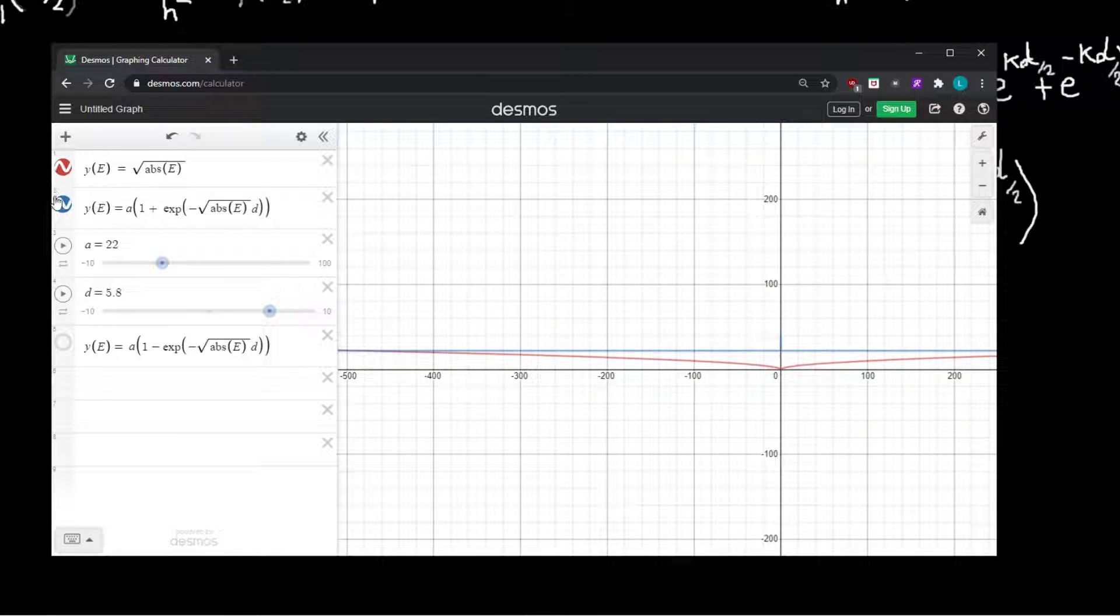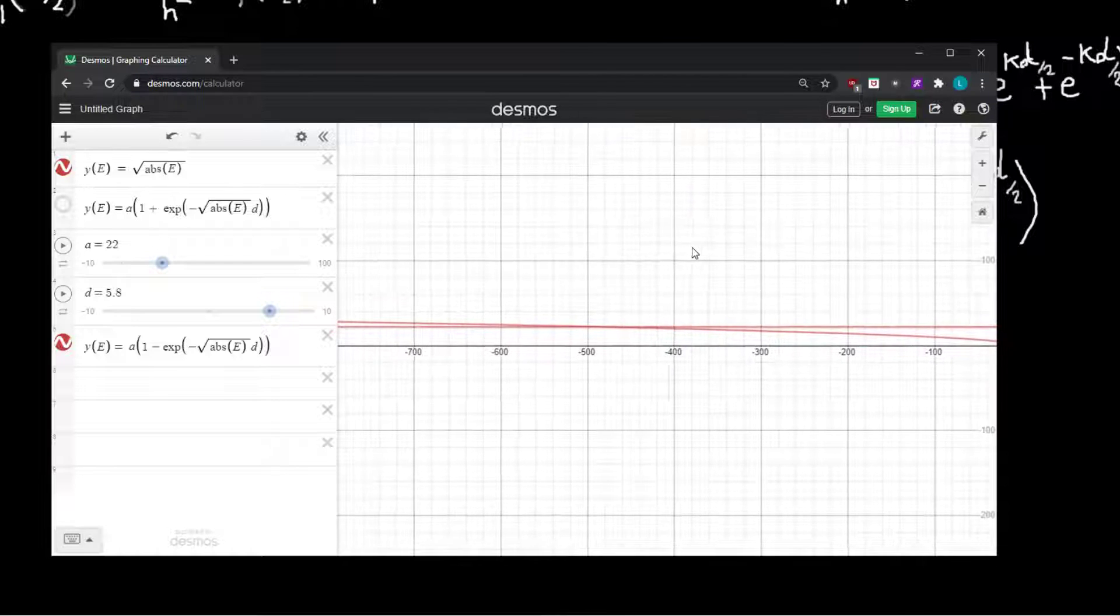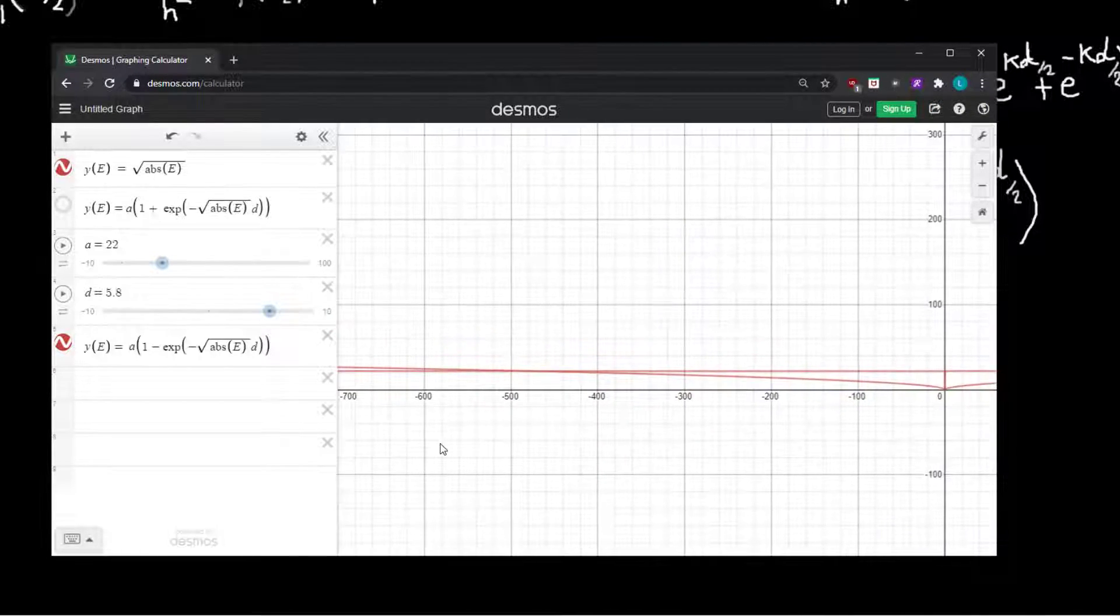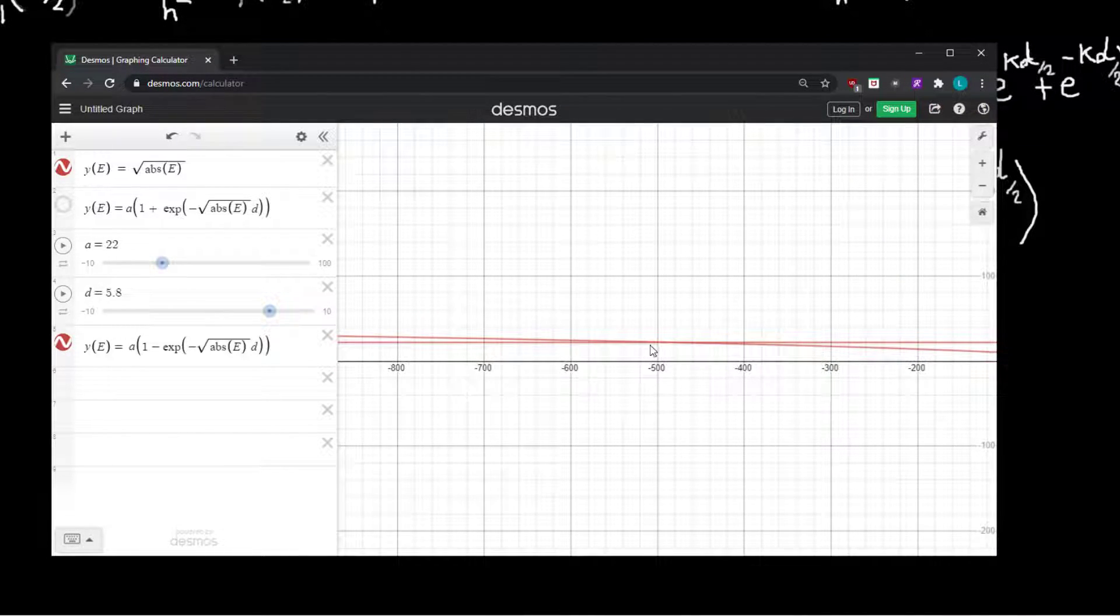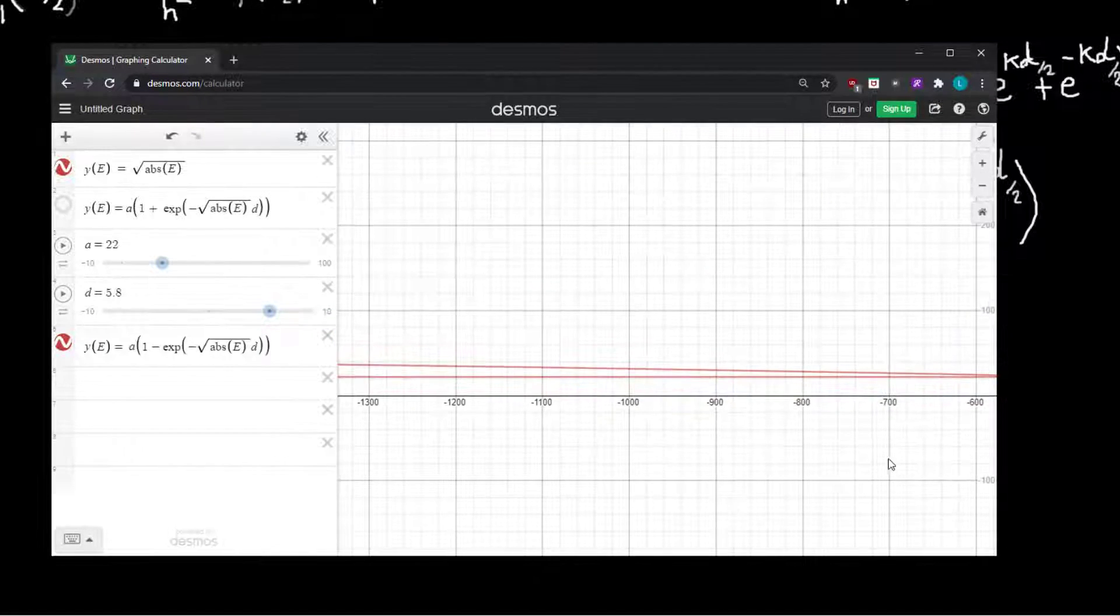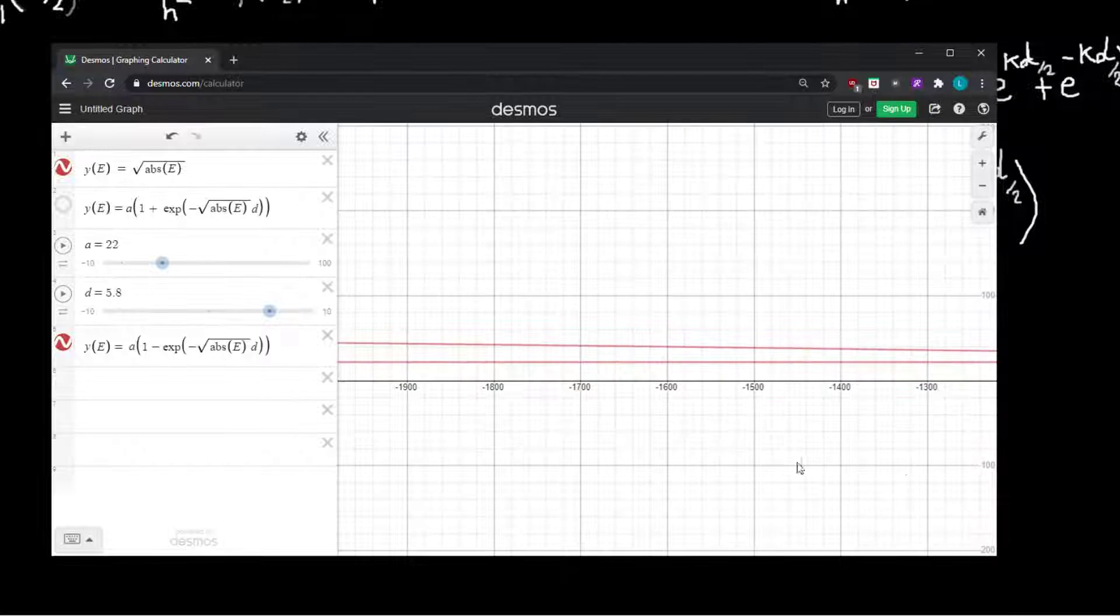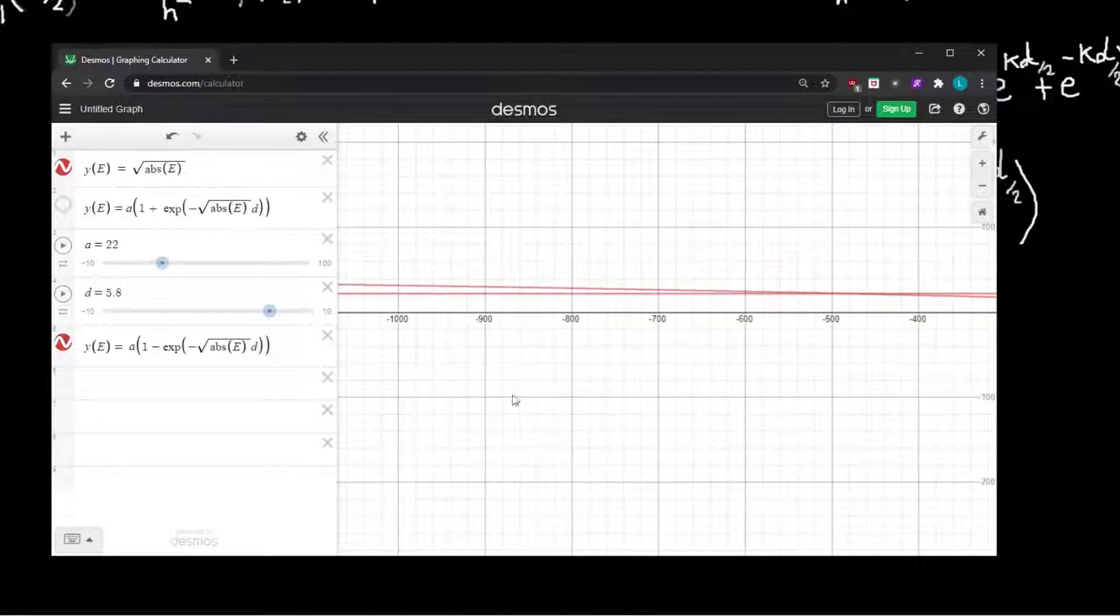If we look at our other equation, unfortunately they're both in red, but whatever, you can also see that there is one intersection. So we have one odd solution as well. So there's one even solution and one odd solution. So there's a total of two bound states.